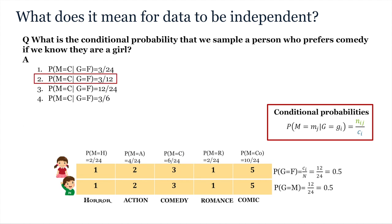So if you found this correctly you will notice that the conditional probability is 3 over 12. This is equal to 6 over 24 which is therefore the same as the marginal probability of choosing a sample where the movie preference is comedy. This gender tells us nothing about movie preference. They're independent.